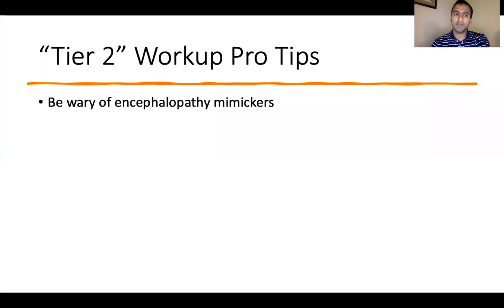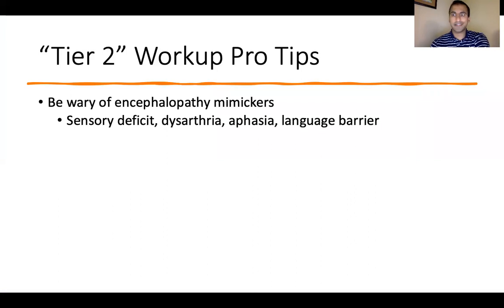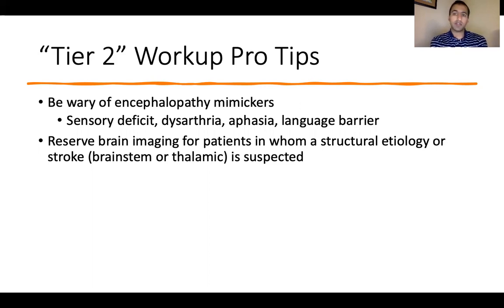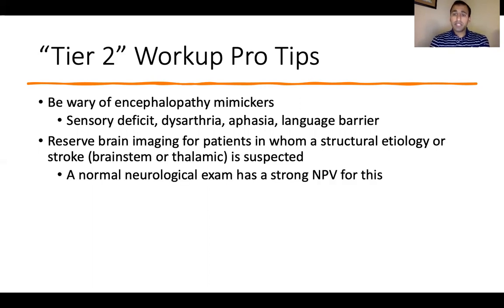A couple of tier two pro tips. First, be wary of encephalopathy mimickers: sensory deficits, dysarthria, aphasia, or a language barrier can make someone look confused on the surface when they're not. Don't miss this. Second, brain imaging — CT or MRI — should be done when you actually suspect a structural etiology or a brainstem or thalamic stroke causing encephalopathy. If you have a completely normal neurological exam with the exception of mental status, that has a pretty strong negative predictive value for a structural etiology or stroke.